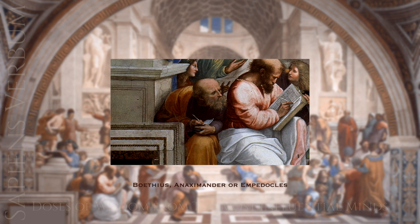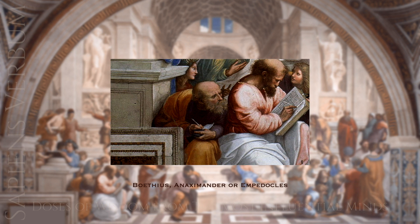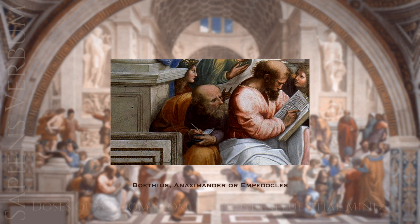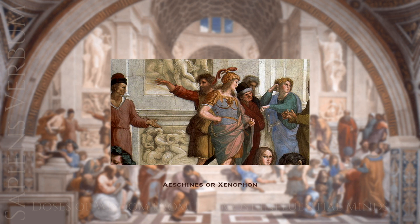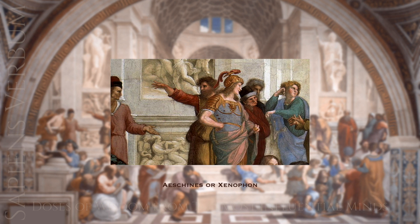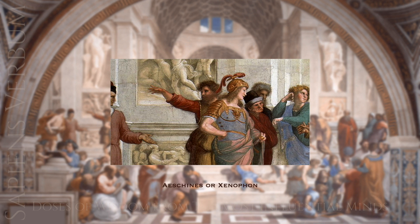Anaximander was a philosopher and astronomer in ancient Greece known for his cosmological theories and his idea of the infinite. Empedocles was a philosopher and poet known for his idea of the four elements: earth, air, fire, and water. Aeschines was a statesman and orator in ancient Greece, a rival of Demosthenes, known for his speeches defending Athenian policies. Xenophon was a philosopher and historian who wrote extensively on the life of Socrates and the history of the Peloponnesian War.